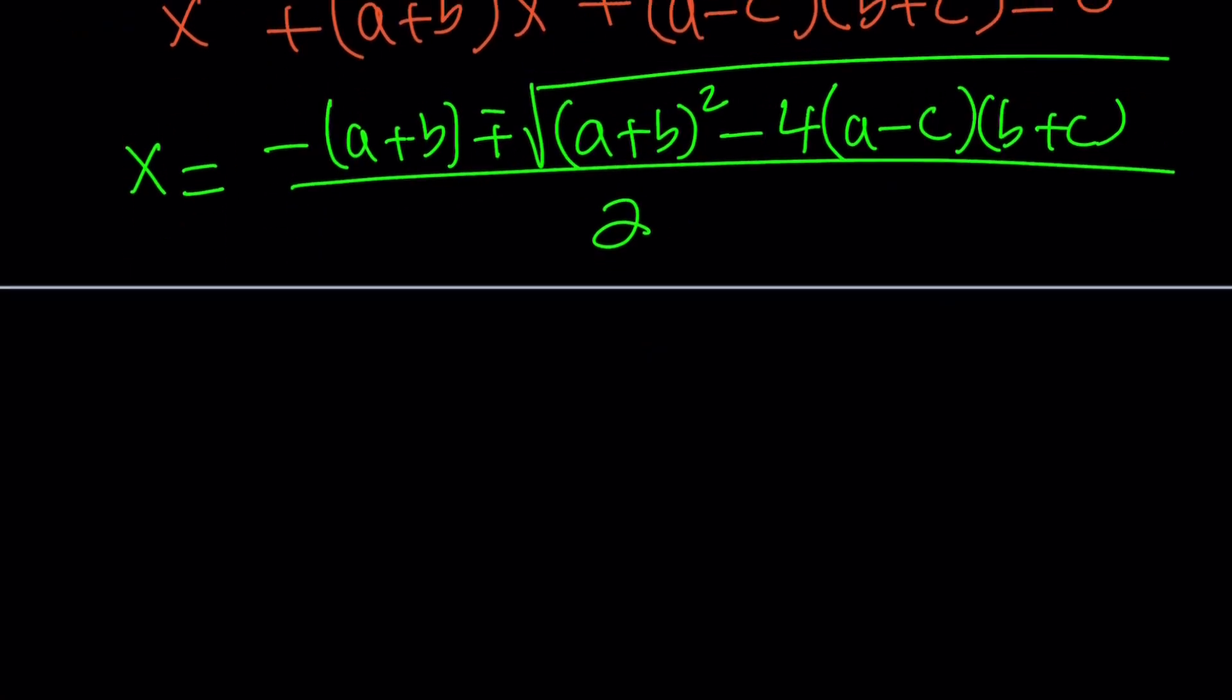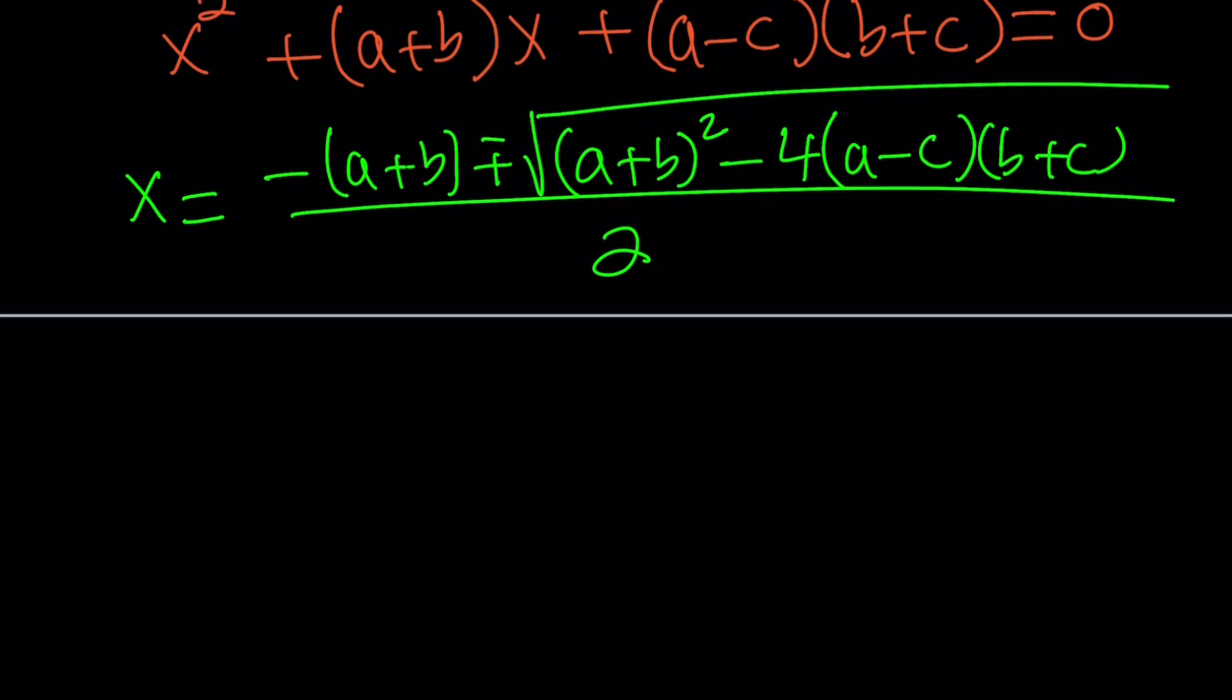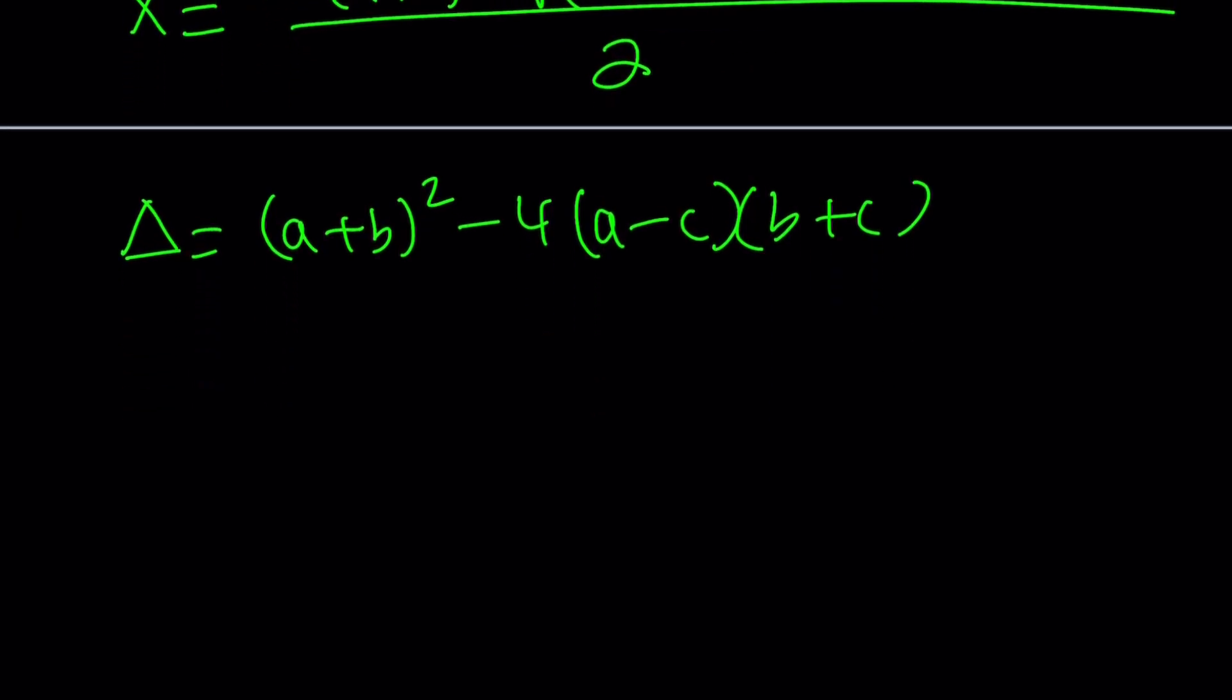Now, let's go ahead and focus on what's under the radical, which is the discriminant. Let's go ahead and write it separately, because what we can do is we can actually simplify this as much as possible and then plug it in instead of writing it every time, because that's going to be real painful, unnecessarily.